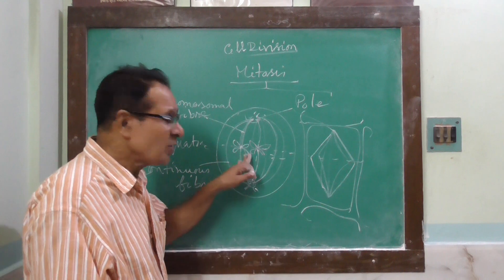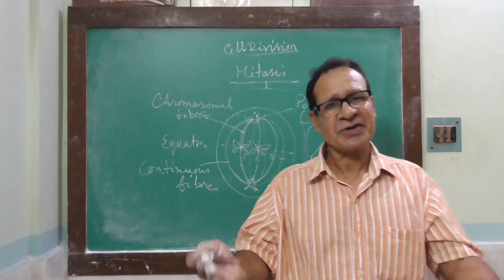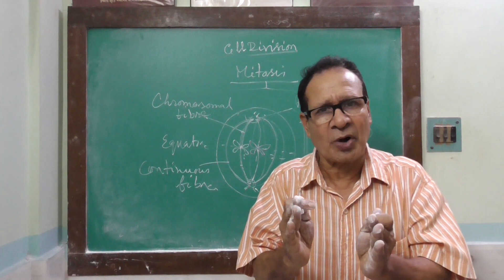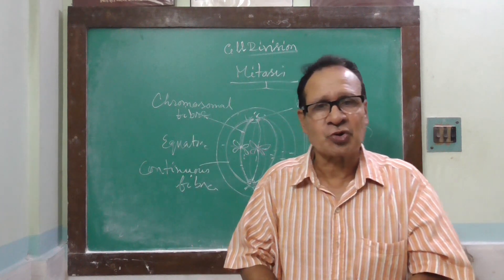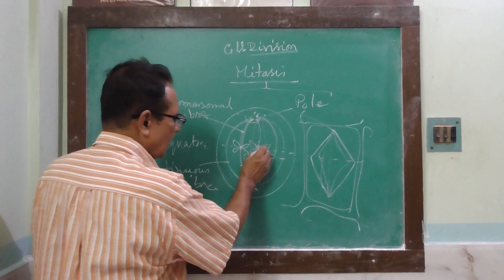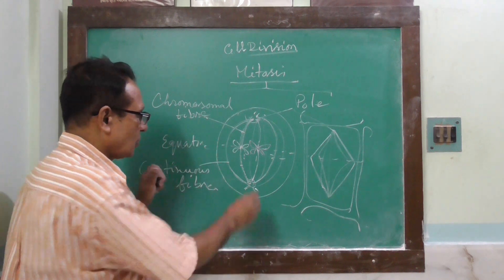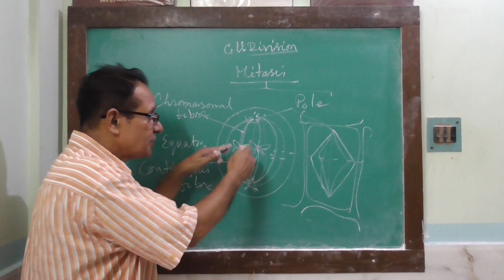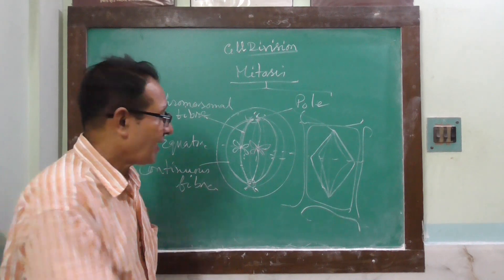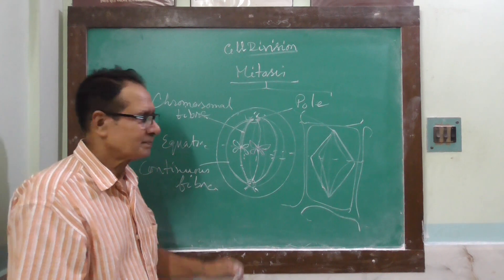During this phase, maximum spiralization and maximum condensation of the chromosome occurs — that is, maximum shortening of the chromosome. That is why when we study chromosomes we take metaphase chromosomes. The chromosomes can be clearly counted under the microscope because of the position of the centromere. If we stain these chromosomes, the centromeres do not take color, and hence by counting the centromeres we can determine the number of chromosomes.